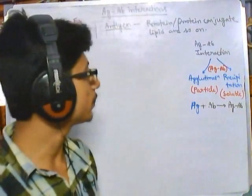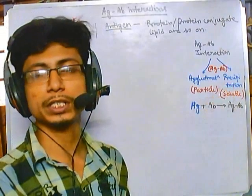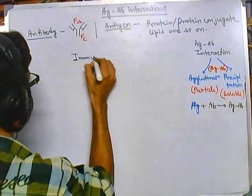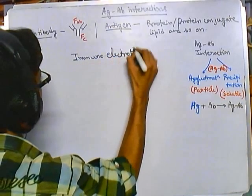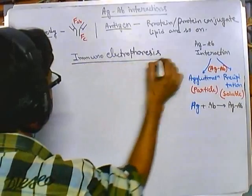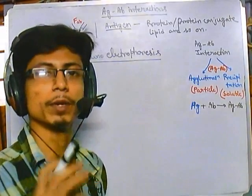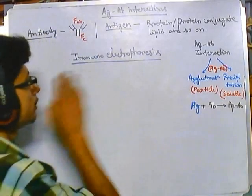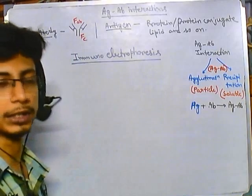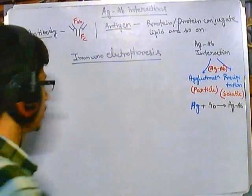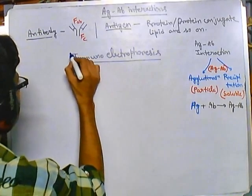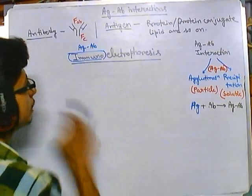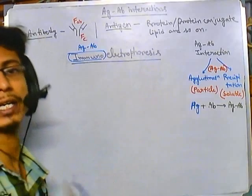We are talking about different types of processes or techniques using the precipitation of antigen-antibody complexes. In this video we'll be talking about another concept called immunoelectrophoresis. Electrophoresis is the movement of any molecule — protein, DNA, or RNA — through a solid matrix using electrical current. Immunoelectrophoresis means antigen-antibody complexes migrate through a solid matrix using electricity.